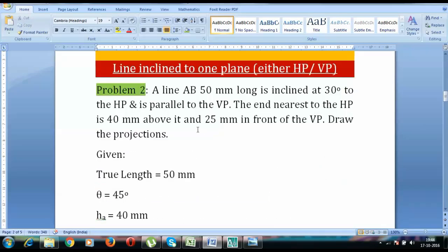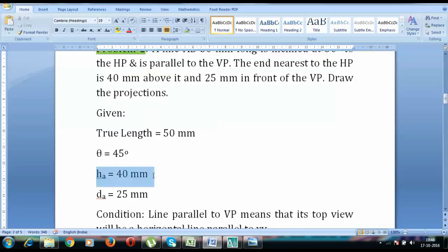Now before that, we have certain data that we need to write down. The nearest end to the HP, let us say that the nearest end to HP is A and it is 40mm above HP and 25mm in front of VP. So HA has been given to us as 40 millimeters, DA has been given to us as 25 millimeters.